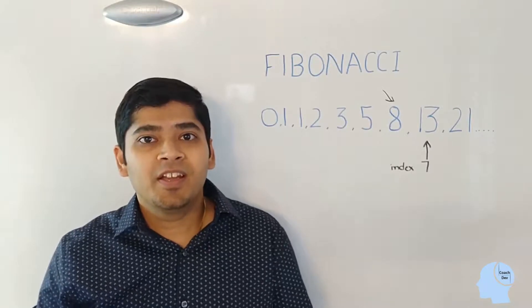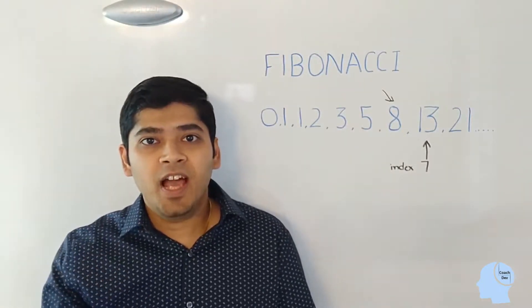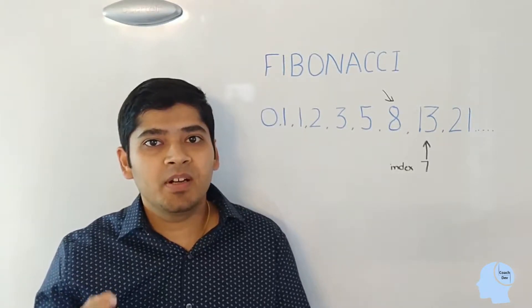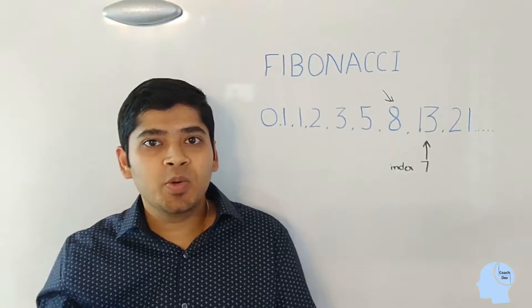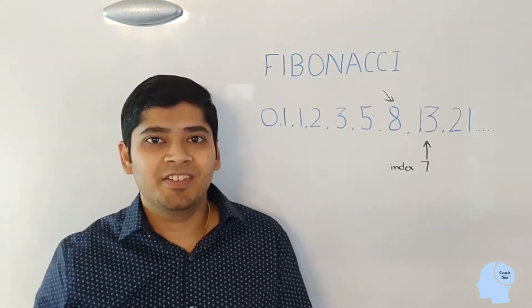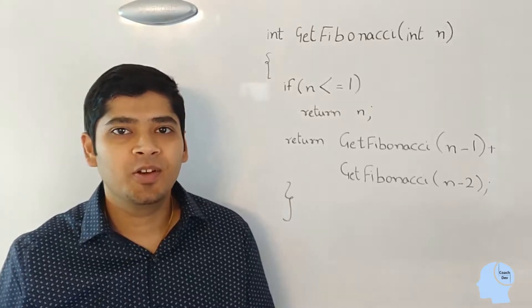The problem is lending a recursive solution to itself. So, in order to get the Fibonacci number at index n, I will have to get the Fibonacci number at index n minus 1 and index n minus 2 and sum them up and return the result.